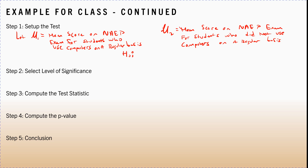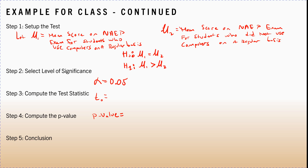The null hypothesis is H₀: mu₁ = mu₂ — we assume computers do not have an impact on learning math. The alternative is Hₐ: mu₁ > mu₂ — if computers do help, the mean test scores for those using computers should be higher. Level of significance is α = 0.05. Now we get the test statistic and the p-value from the calculator.